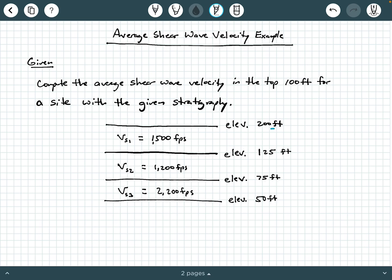So from elevation 200 down to 125, we have a shear wave velocity of 1500 feet per second, FPS is feet per second.